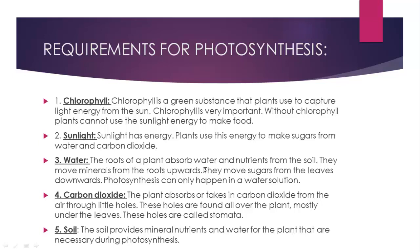Number three is water. Photosynthesis can only happen in a watery solution. The roots of a plant absorb water and nutrients from the soil and transport it upwards. When sugars are made, they are also transported from the leaf downwards, so sugar is transported to all parts of the plant. Number four is carbon dioxide, which is absorbed by plants from the air through little holes called stomata. These stomata are present all over the plant, mostly under the leaves. Finally, the soil provides mineral nutrients and water for the plants that are necessary during photosynthesis.